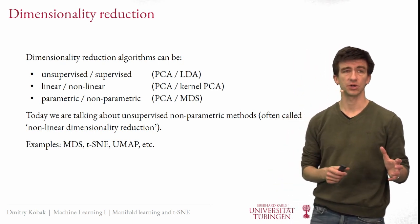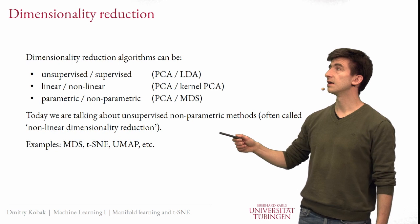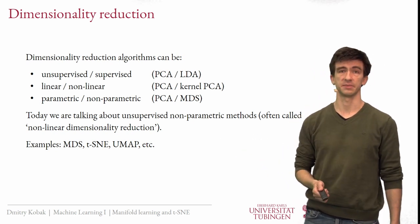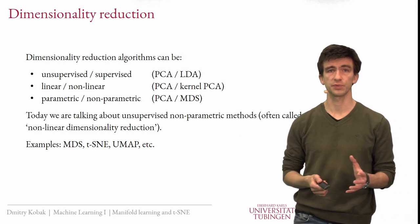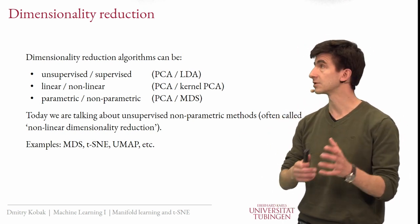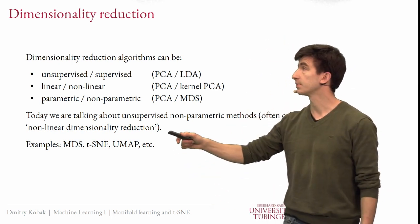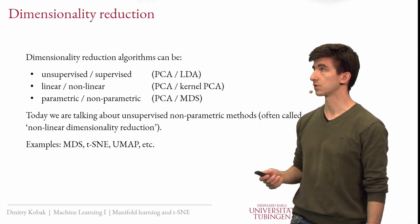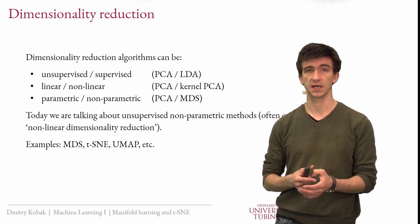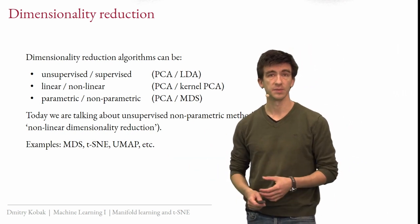Just a note on terminology: in the literature, methods like T-SNE are often called nonlinear dimensionality reduction. I find this a bit sloppy because there is no mapping — no function that can be linear or nonlinear at all. But they are often called that. Examples of these methods are multidimensional scaling, T-SNE, UMAP, and many others.